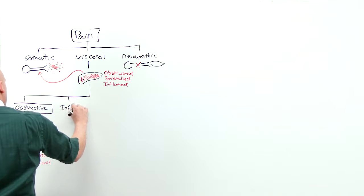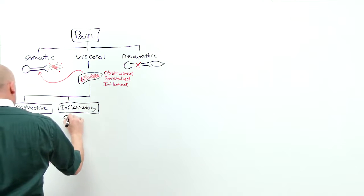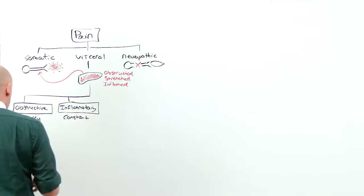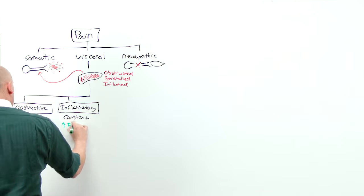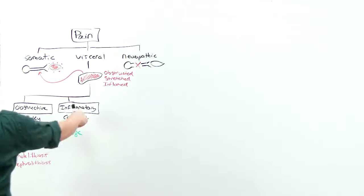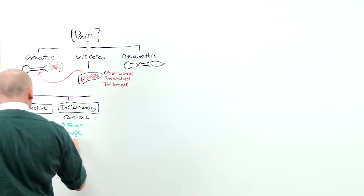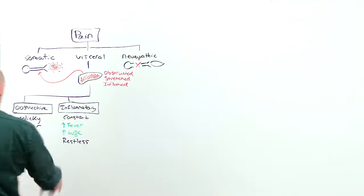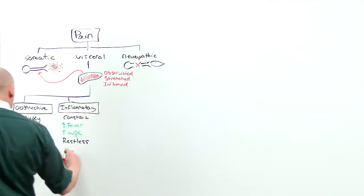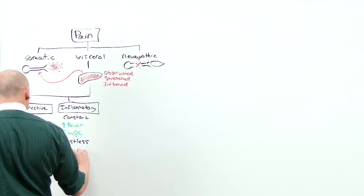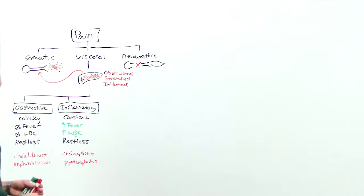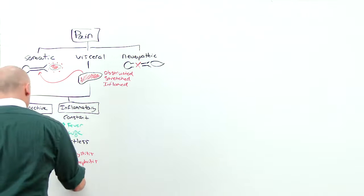Inflammatory visceral pain is when that colicky pain becomes constant. And now that there is inflammation, you'll see a low-grade fever and an elevation in the white blood cell count. These patients with inflammatory pain will be restless as well, but they'll find no position of comfort. Using the cholelithiasis and nephrolithiasis as our examples, this now becomes cholecystitis and pyelonephritis. Solid organs can also become inflamed, which is why pancreatitis hurts.